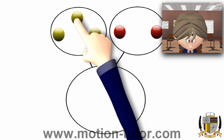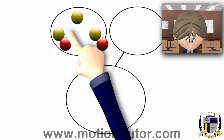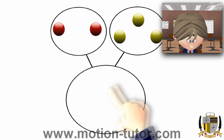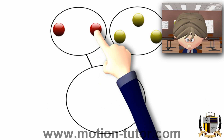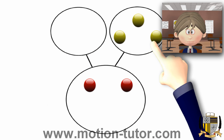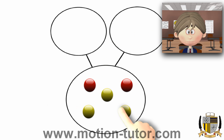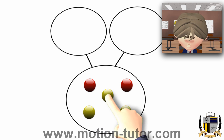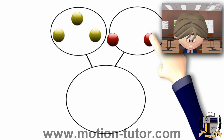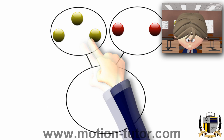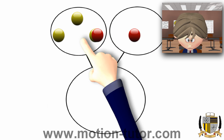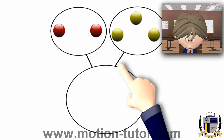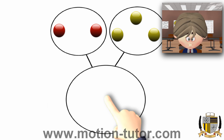Now, looking at these — guess what? We could even switch them around. We could have 2 over here and 3 over here. Would they still equal 5? Let's take a look. Bring the 2, bring the 3, and look — we still have 5: 1, 2, 3, 4, 5. So it doesn't even matter which number is over here or over here. If we switch them around, it doesn't matter. It still will equal to the same number when we put them together.